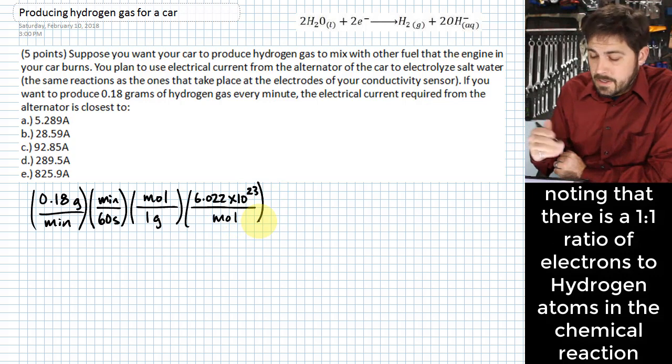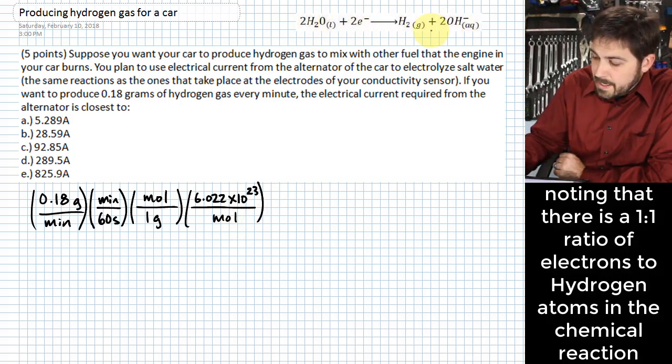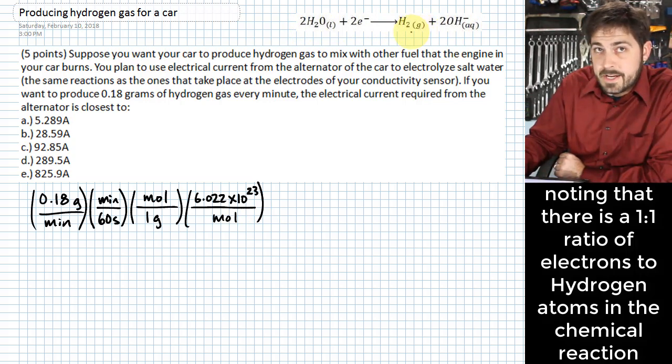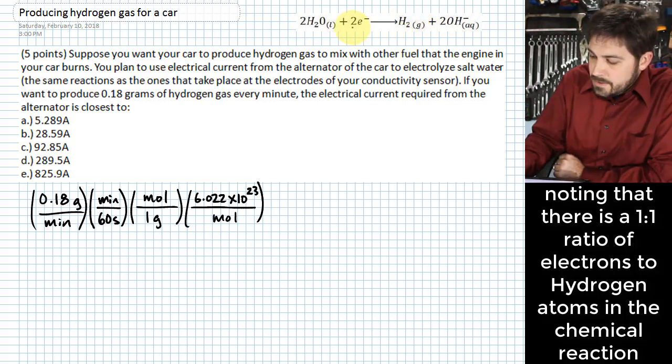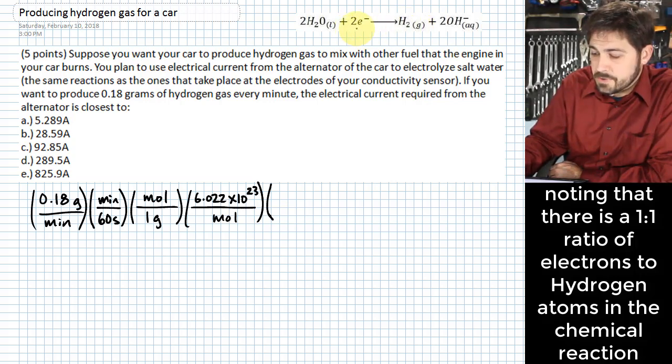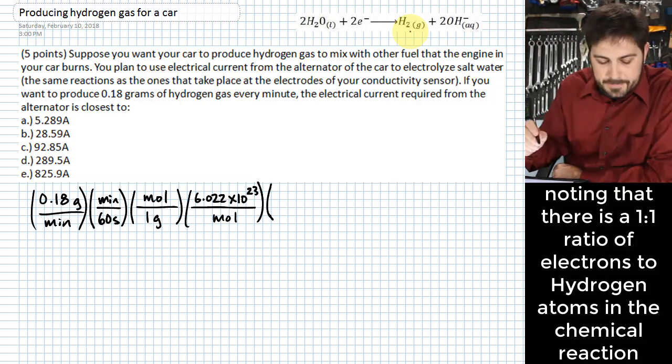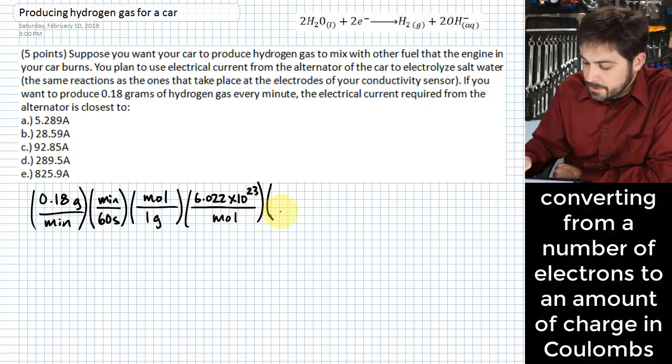The next thing we need to do is use this idea that we know this reaction that takes place that electrolyzes that hydrogen in the first place. And we notice that there is a ratio of two to two basically, or one to one is another way to say the same thing, two electrons for every two hydrogen atoms. And so we don't need to do anything special as far as doing a multiplier. There's just for every electron, there is a hydrogen atom. So that means that the number of hydrogen atoms is the same as the number of electrons.